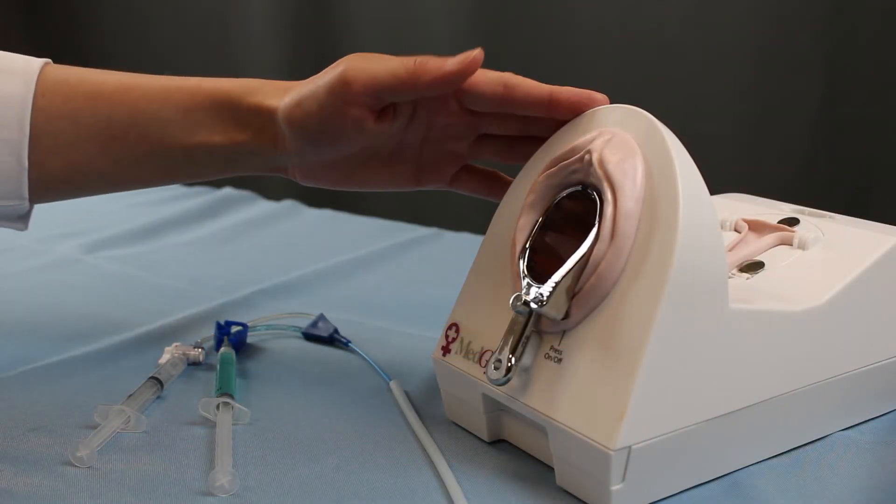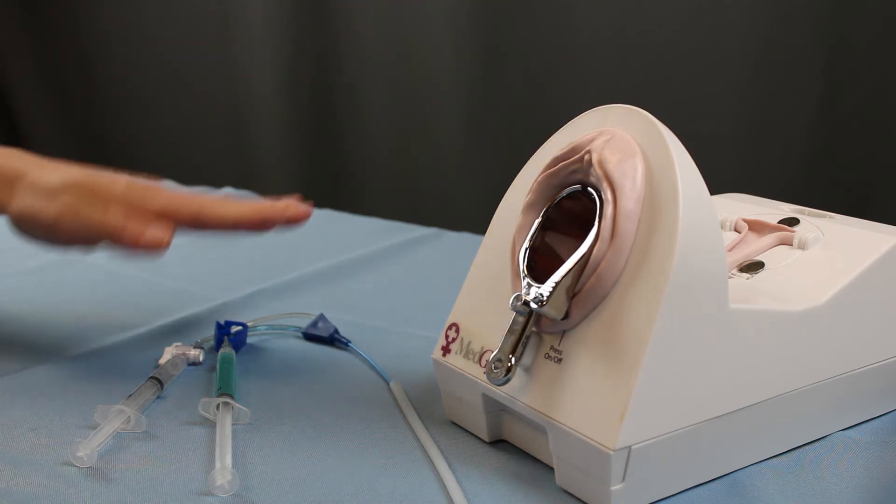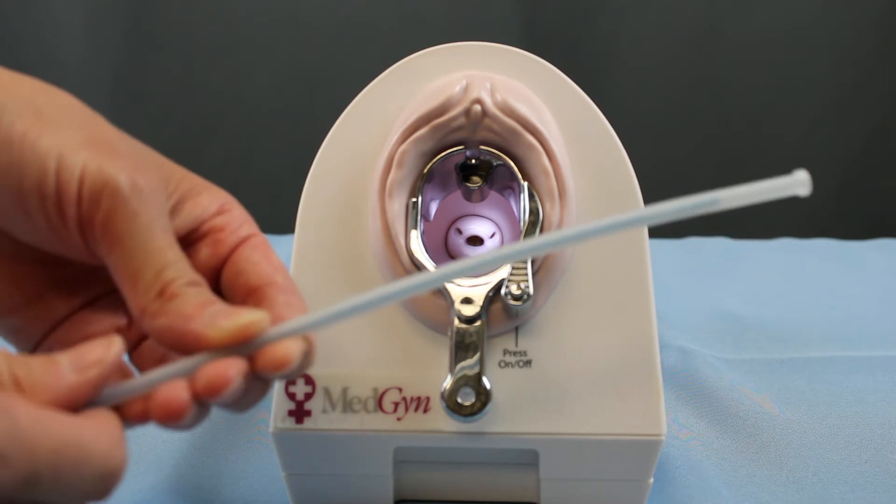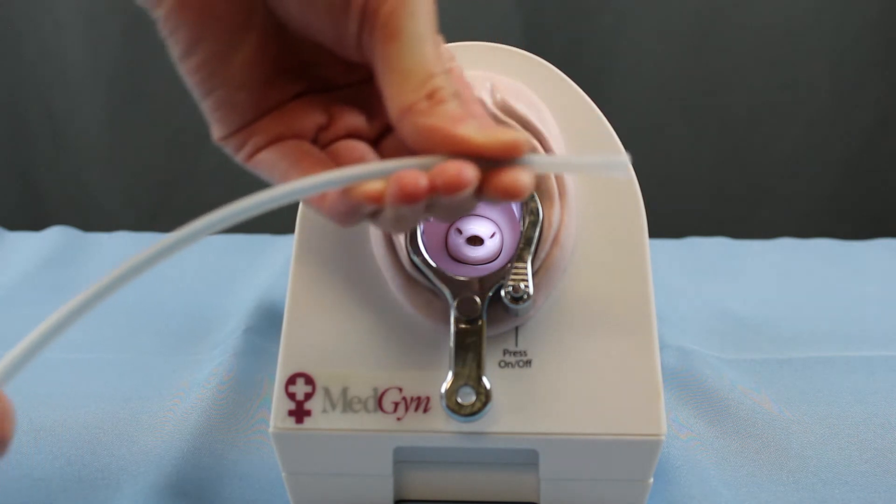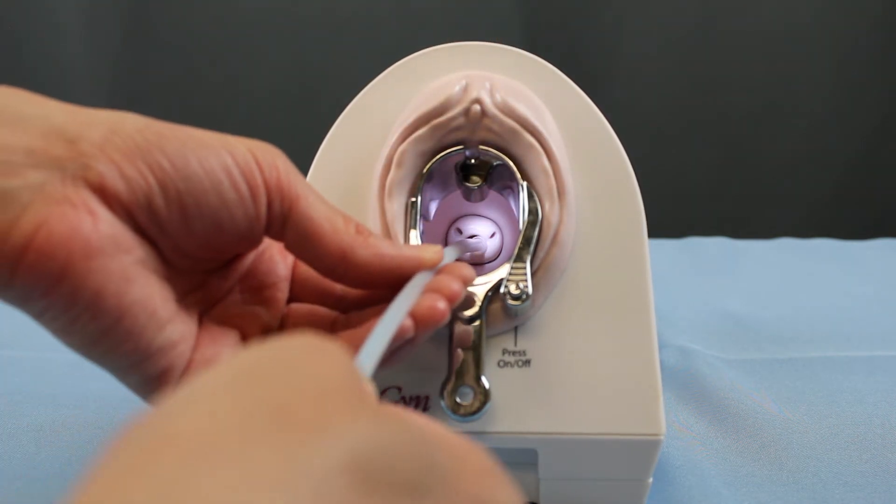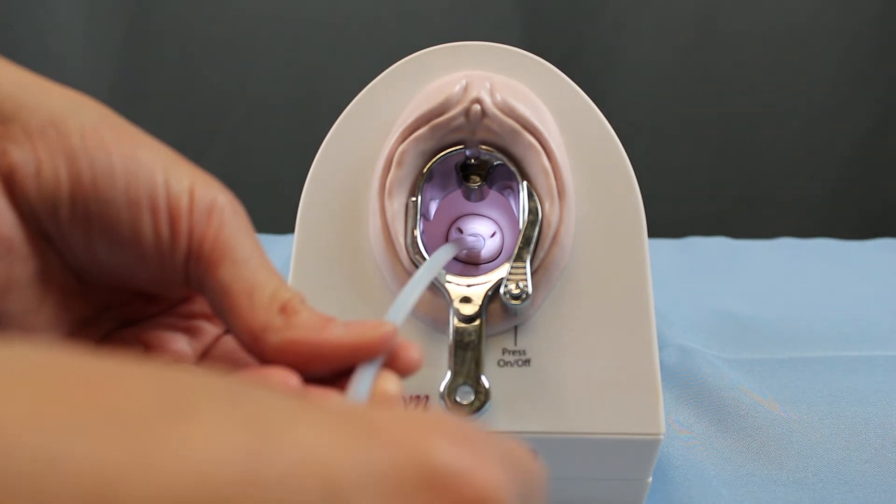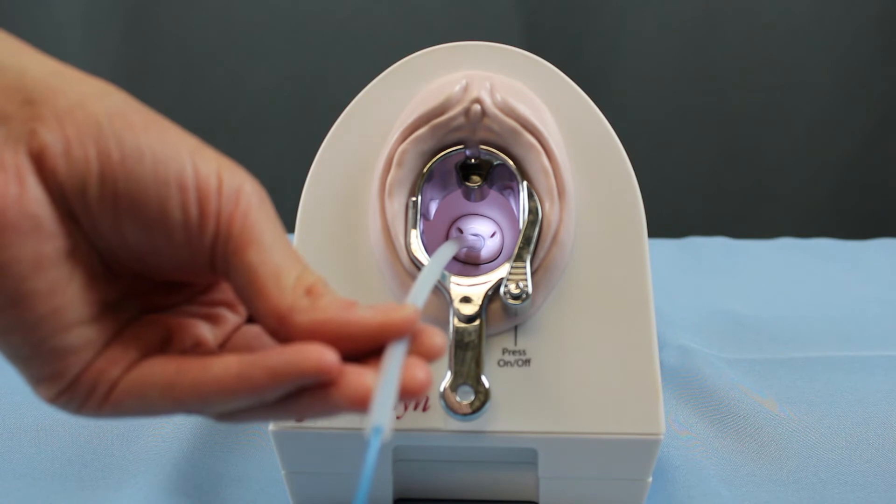Once the patient has been prepped for the HSG procedure, placement of the HSG catheter can commence. After visualizing the cervical face, gently shape the introducer placement sheath to suit the patient's body. Set the catheter and sheath against the external os of the cervix. Once aligned, advance the catheter through the cervical canal and into the uterine cavity.